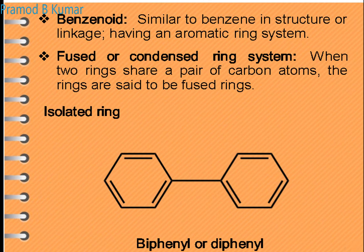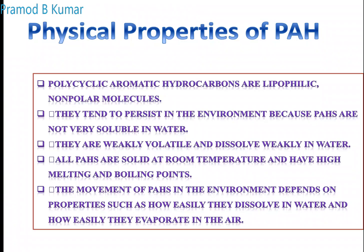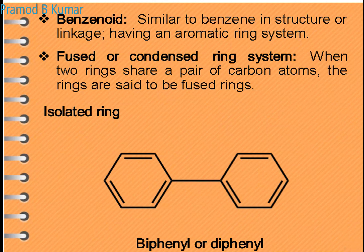Benzoid means similar to benzene structure — they have aromatic rings, a six-membered ring with alternate double bonds in a conjugated system. They can be either isolated or fused. Fused means the two rings are brought together. The example of an isolated ring is biphenyl or diphenyl, where the two aromatic benzene rings are joined by a carbon-carbon single bond. Fused examples are naphthalene and related condensed rings.